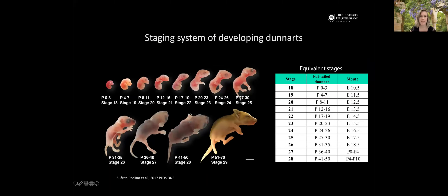Layer six contains corticothalamic projecting neurons in both species; layer five contains corticospinal projecting neurons; and layers two, three, and five contain intracortically projecting neurons. However, those intracortically projecting axon tracks go different routes — in mouse via the corpus callosum, and in marsupial via the anterior commissure. We've put in a lot of groundwork developing this as a truly useful model organism.